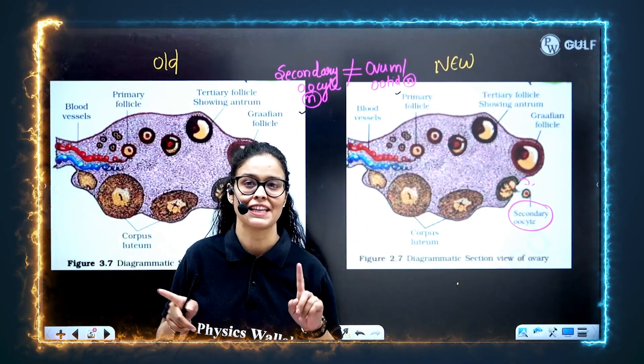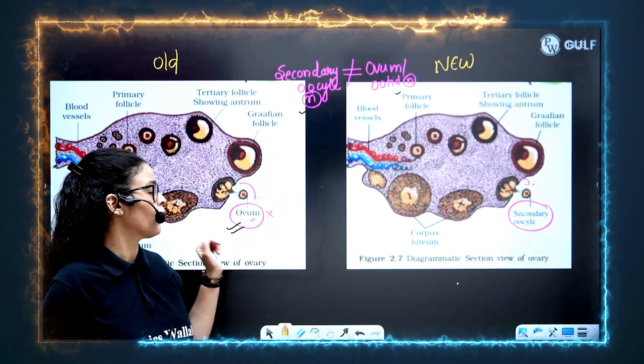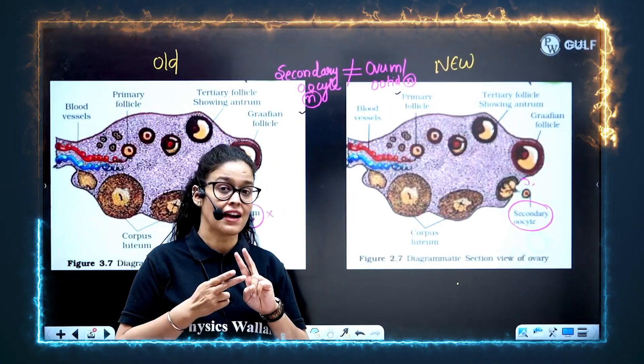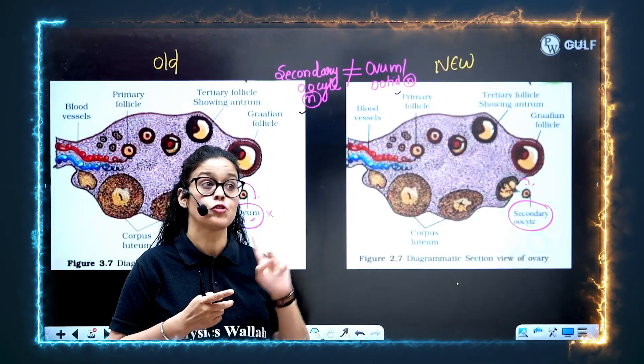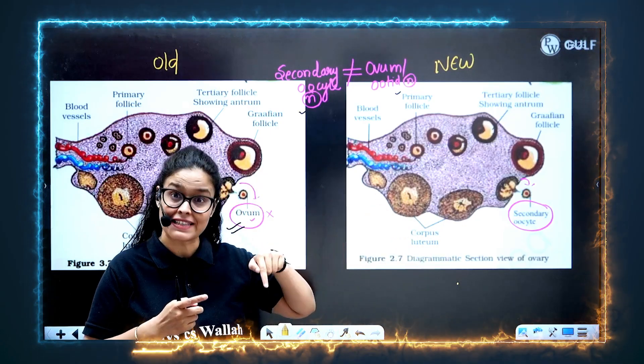In your old NCRT, they wrote that during ovulation, ovum is released. They asked you it in the exam, and you will be writing secondary oocyte even this year also.